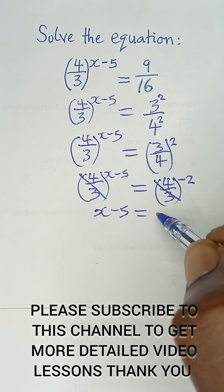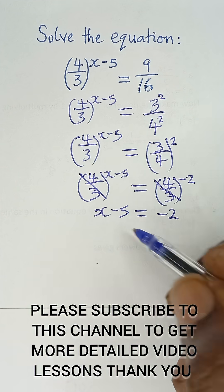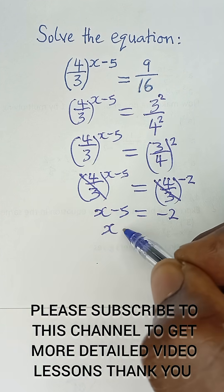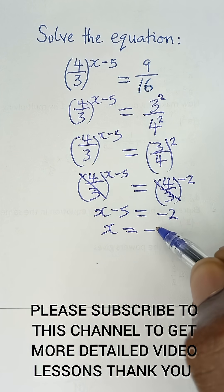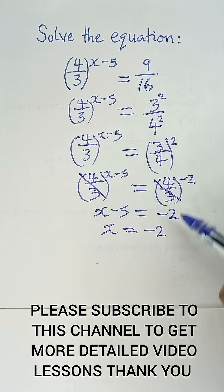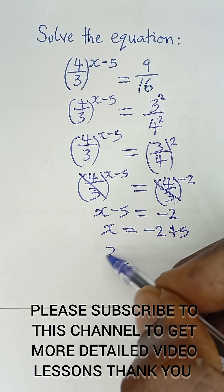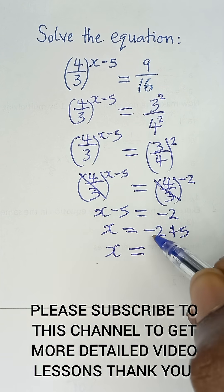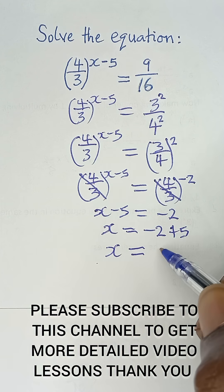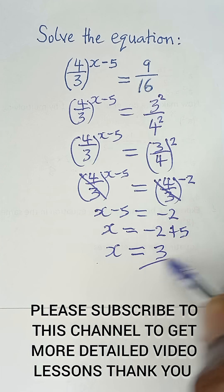So, if I leave x on this side, I have x is equal to negative 2 on this side. Then this negative 5 becomes positive 5. So, finally, I have my x is equal to negative 2 plus 5, which will give us 3 as the final answer.